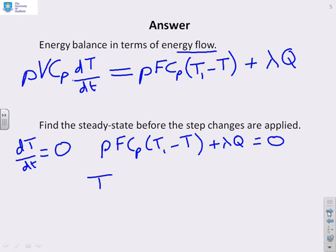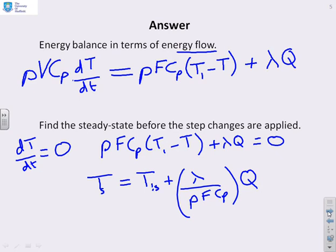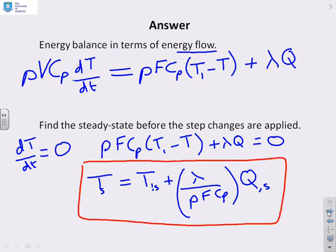If I rearrange this, then I've got T for the output equals, now I'm going to do a divide here to make life a bit easier. So you're going to have T_i and then you're going to have plus λ/(ρFCp) times Q. Now what I haven't done yet is denoted that we're talking about steady state. And the way we normally do that is by putting like a subscript s down here. So I put that subscript, I can now tell that this expression tells me what the steady state is.